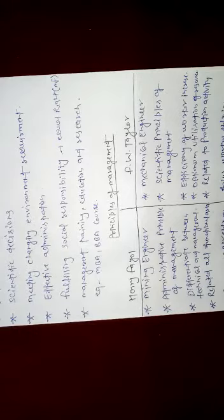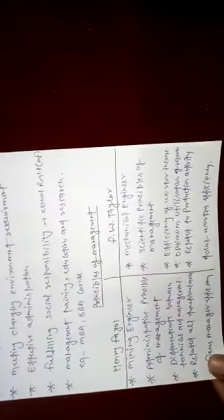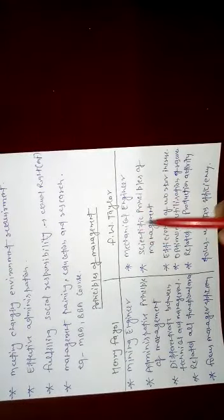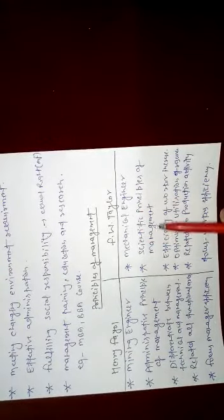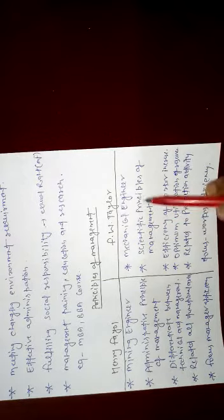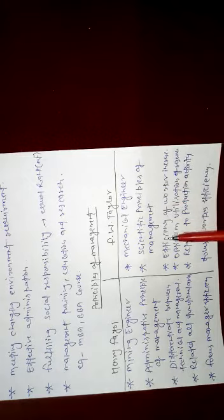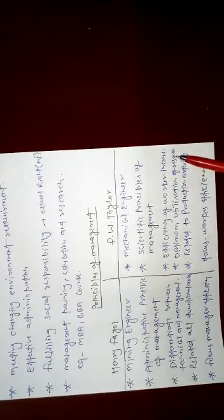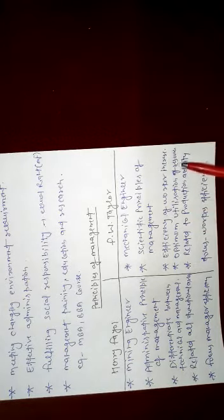F.W. Taylor was a mechanical engineer who believed that if worker efficiency is enhanced, the output will be more and more effective. Taylor said that the scientific principle of management is most effective. Efficiency of workers must be increased, and optimum utilization of resources means minimum input and maximum output when resources are optimally utilized.